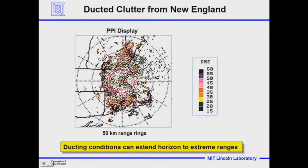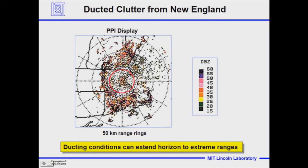Here is a plan position indicator — a display of detections above the minimum detectable signal of a radar located in the vicinity of Boston, Massachusetts. You can see in dark solid lines the outlines of the states: Cape Cod, Rhode Island, eastern Connecticut, New Hampshire, and Maine. Typically under normal atmospheric propagation you just see a little ground clutter around the Boston area, perhaps a little around the hills of Worcester, but you would not see any detections from Cape Cod — which is only 50 to 100 feet above sea level — out at 100 kilometers.